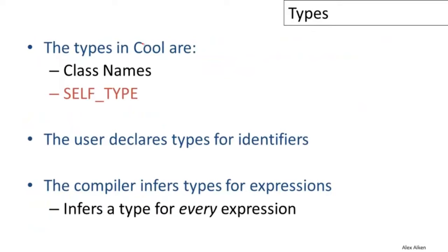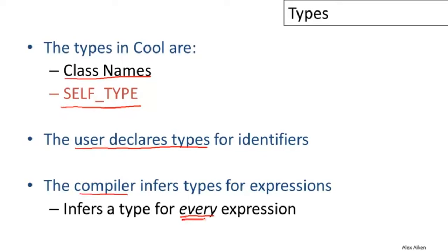Cool is a statically typed language. The types available in Cool are the class names — every time you define a class, you define a new type — plus the special reserved symbol self-type, which we'll discuss separately. The user declares types for identifiers, and then the compiler infers types for expressions, assigning a type to every single expression in the program using the declared types.